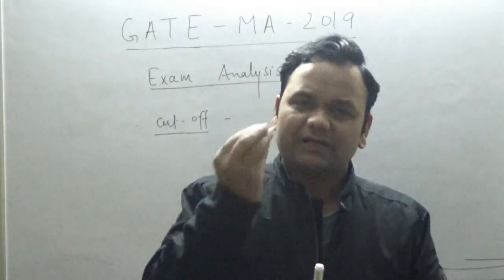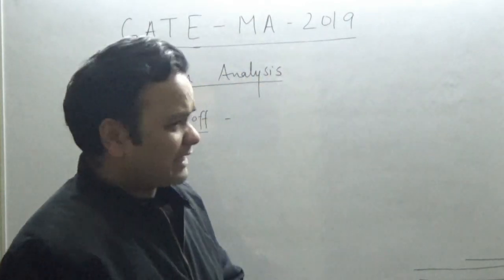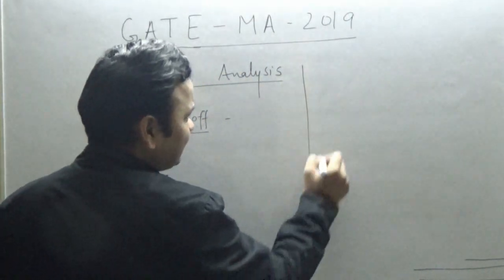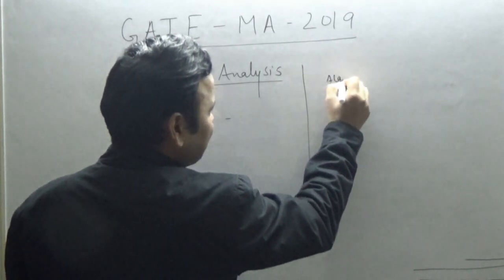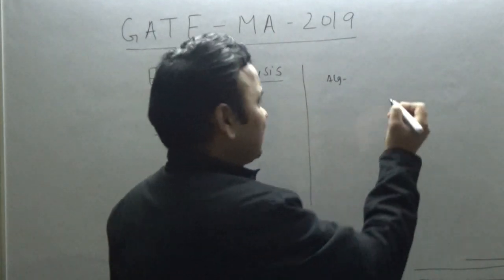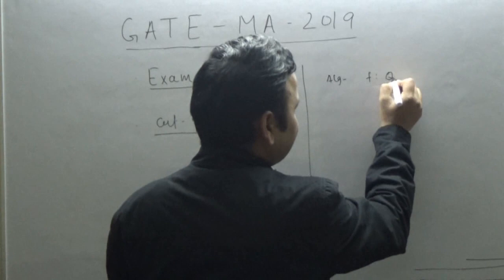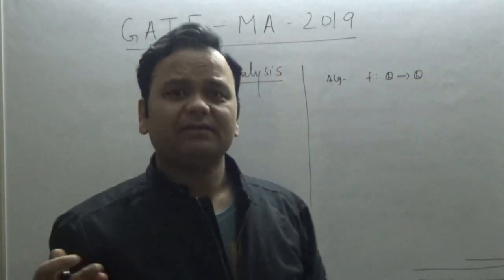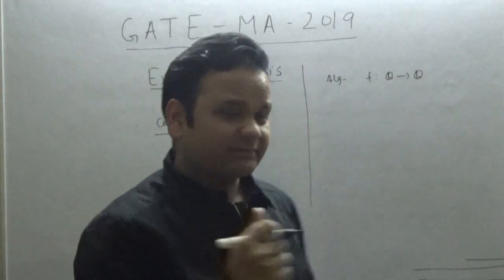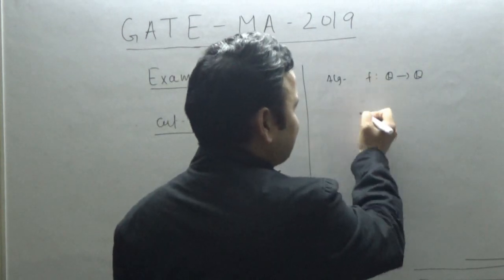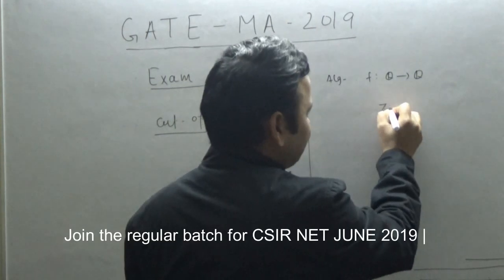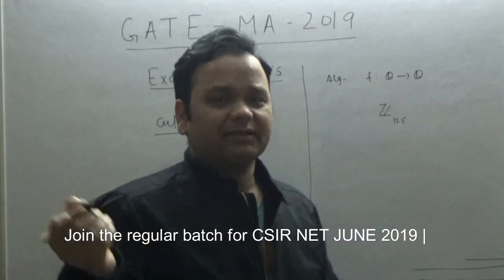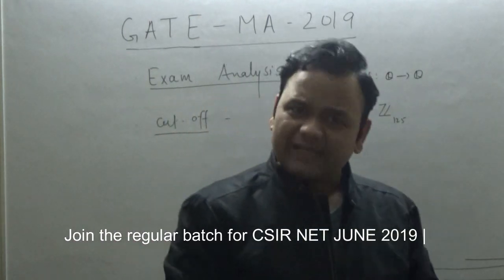For example, in the algebra section, they asked questions like: if there is a homomorphism from Q to Q, does it imply that it is an isomorphism? They also asked about the number of maximal ideals in a given ring. So certain questions like that were in the algebra section.